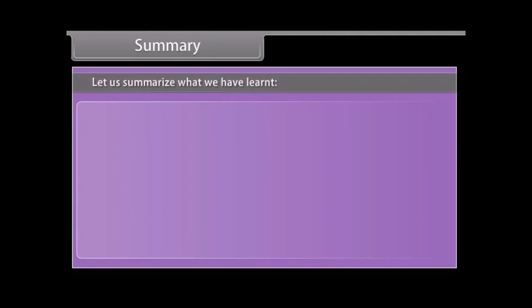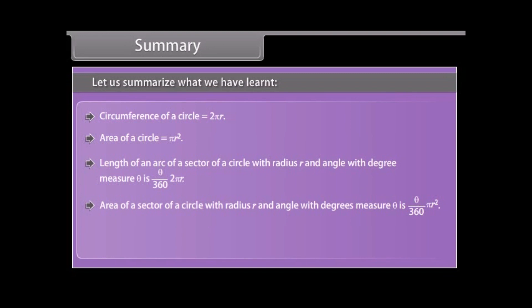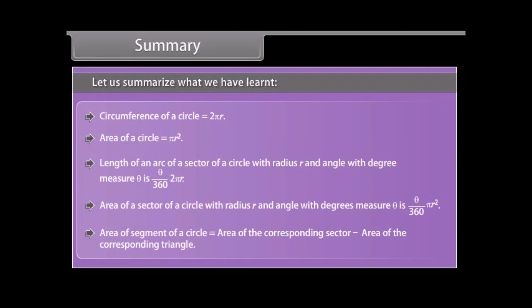Summary: Let us summarize what we have learned. Circumference of a circle equals 2πr. Area of a circle equals πr². Length of an arc of a sector of a circle with radius r and angle theta degrees is theta/360 × 2πr. Area of a segment of a circle equals area of the corresponding sector minus area of the corresponding triangle.